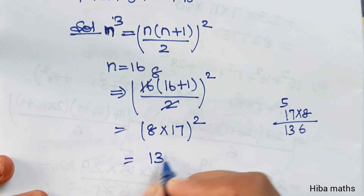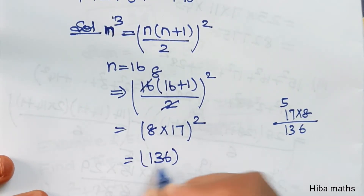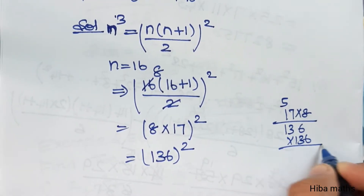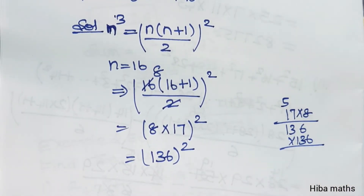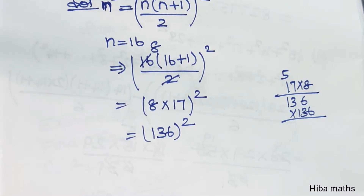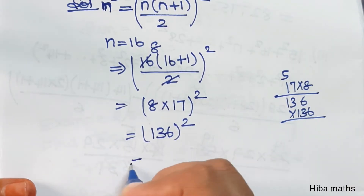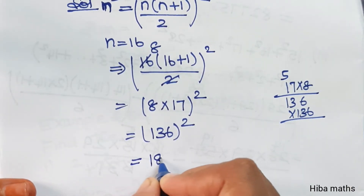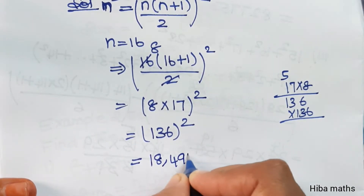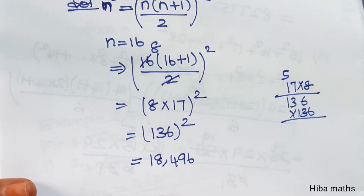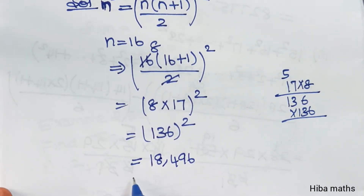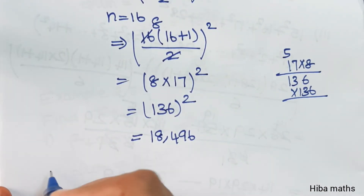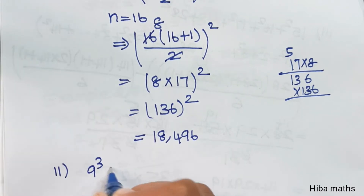So 136 squared: 136 into 136 equals 18,496. So the answer to the first part is 18,496.